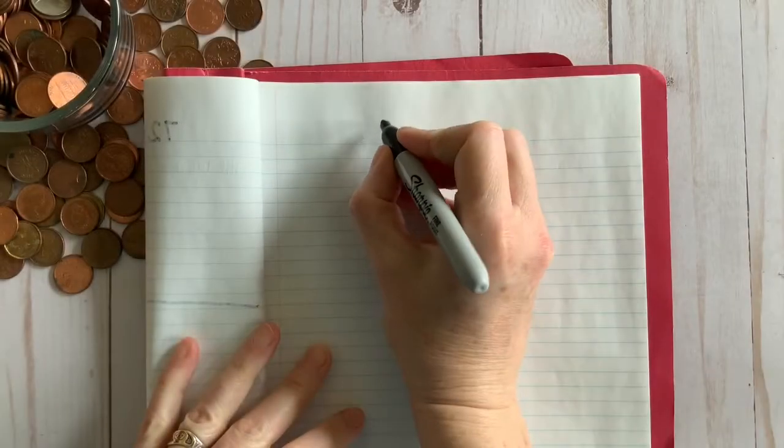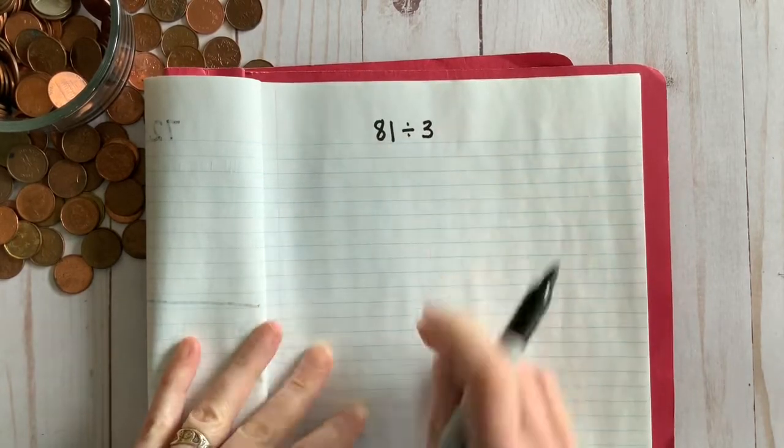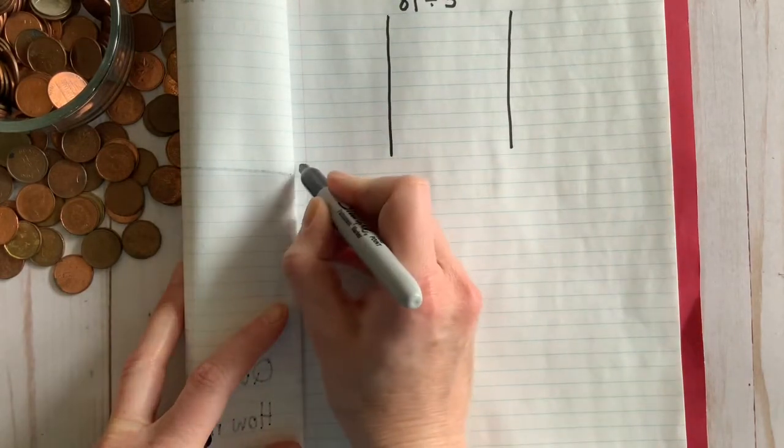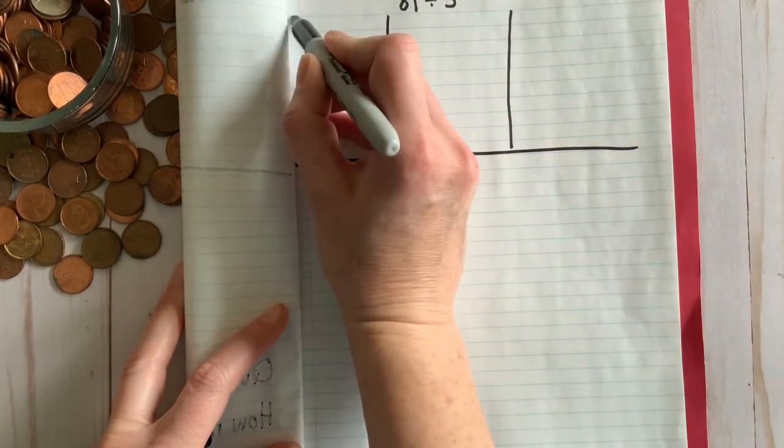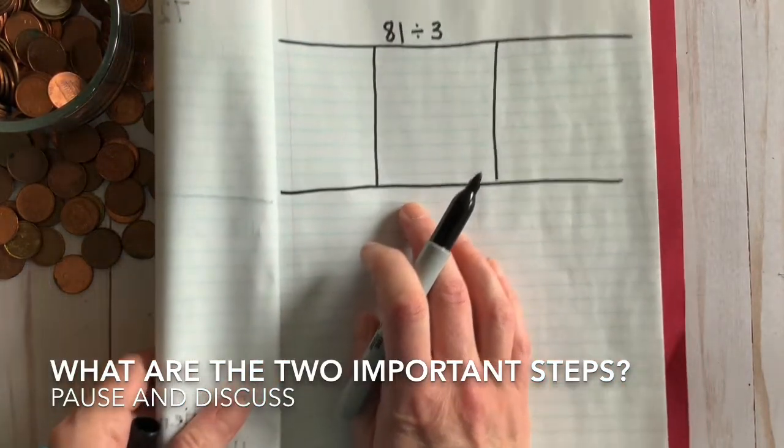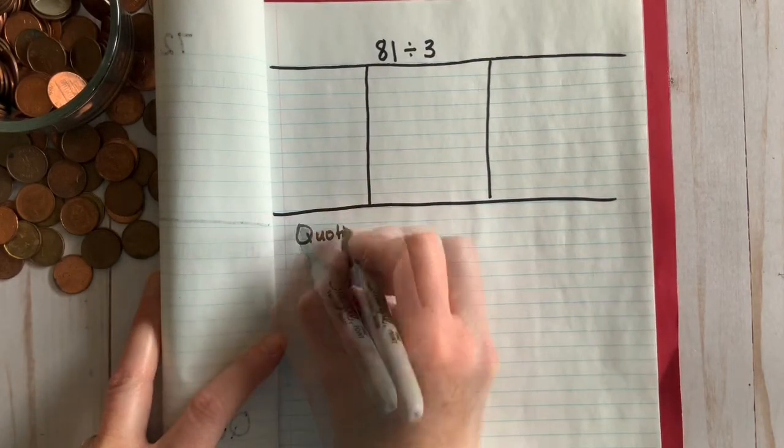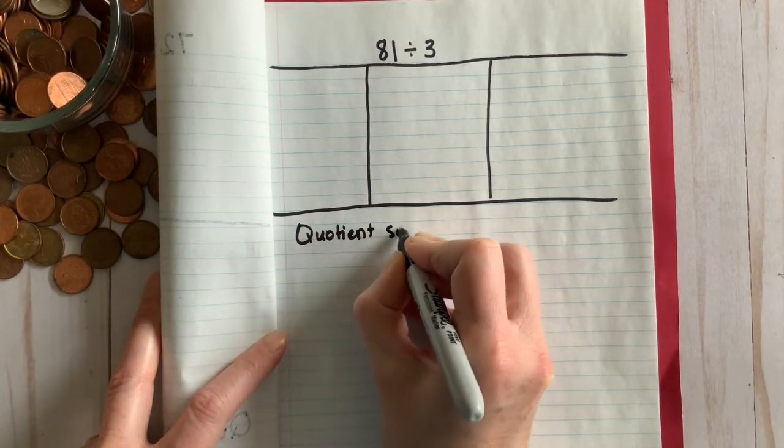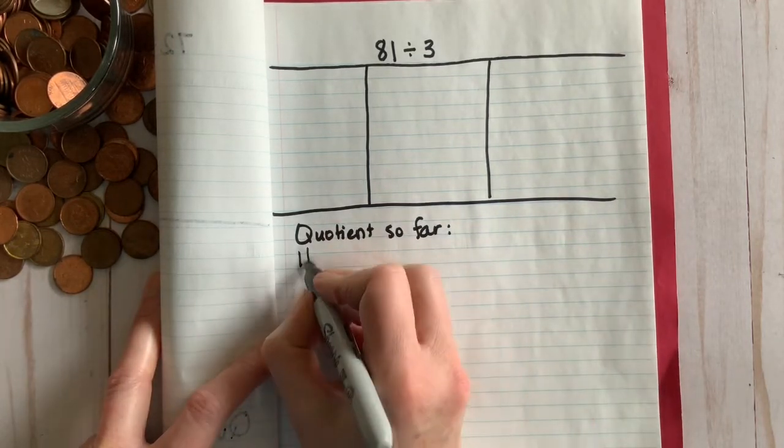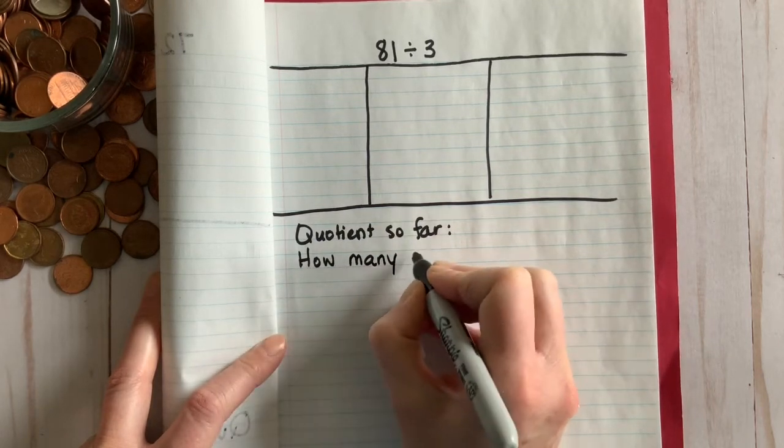Let's try one more. We'll see if we can make this one a little faster, shall we? Okay, 81 divided into three even and fair groups. So what are those two important steps you have to remember for every division algorithm? Pause and see what you remember. Step one: keeping track of the quotient so far, and step two: keeping track of the amount left over that you have to still divide.